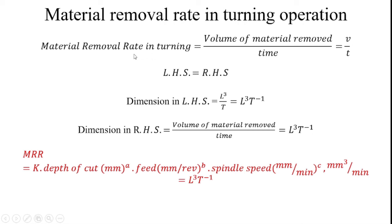The dimension for material removal rate is always denoted as mm cubed divided by time in seconds, which can be expressed as L cubed by T, and also written as L cubed into T power minus 1.